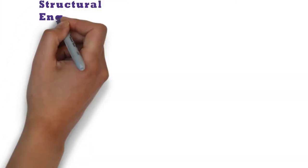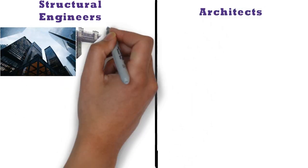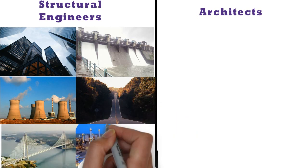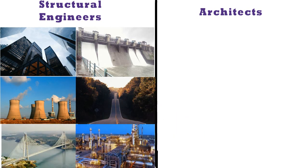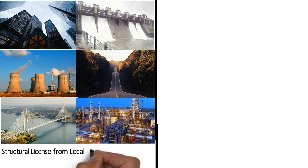The different types of structures designed by structural engineers are buildings, dams, power plants, roads, bridges and oil and gas plants. One can also do freelancing after getting a structural license from the local municipal body. This license helps the structural engineer to vet the engineering drawings.